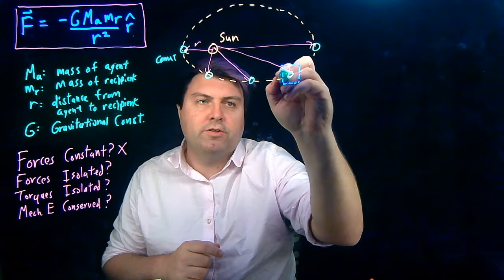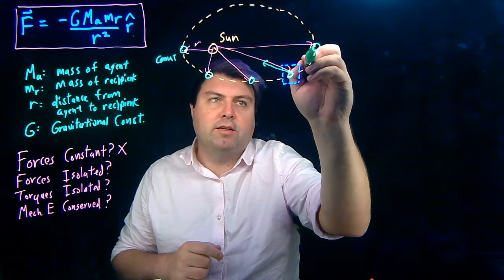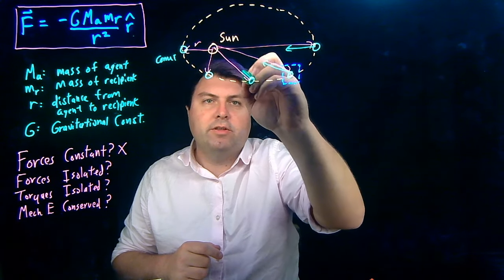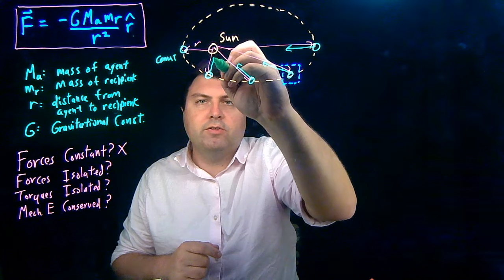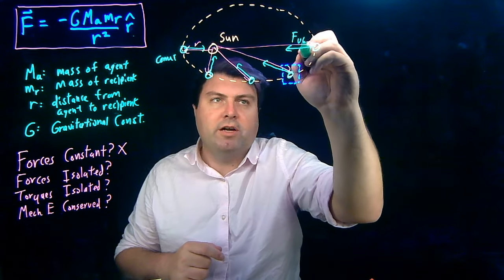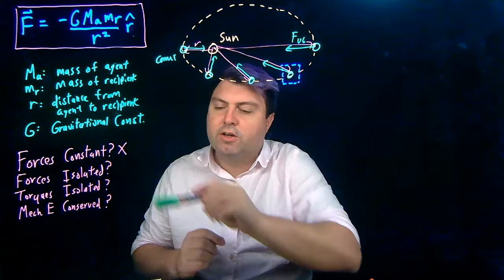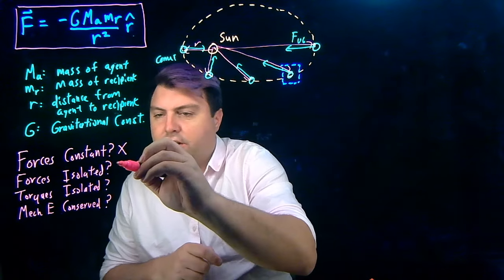And if we consider just the comet itself, then we have a force pointing back at the sun. And so this sun and this force is our force of universal gravitation. And so we can take a look at that and say, hey, we have a force, so our system is not isolated.